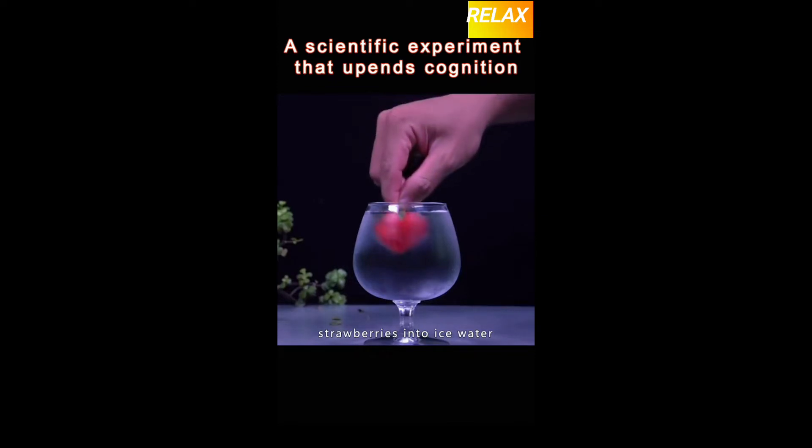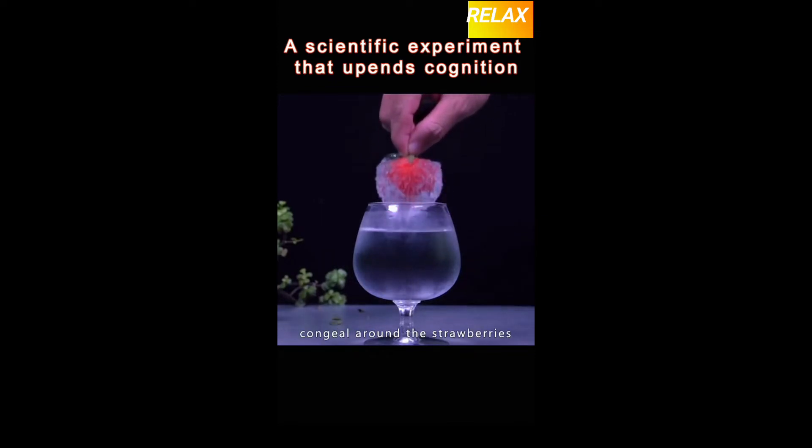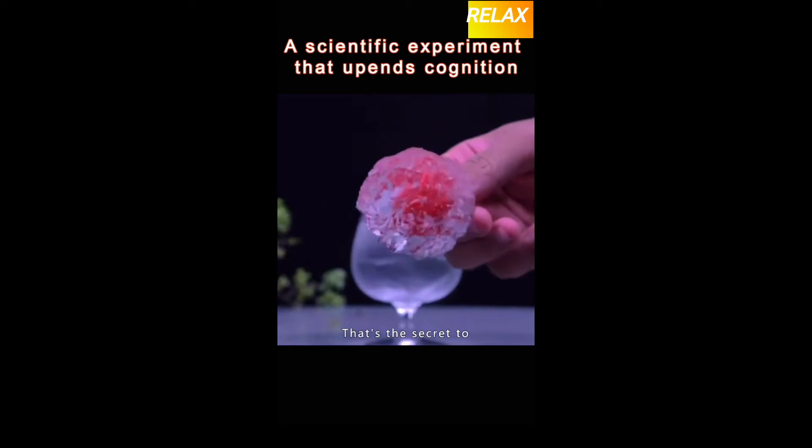Put the frozen strawberries into ice water. The water will instantly congeal around the strawberries. That's the secret to turning water into ice.